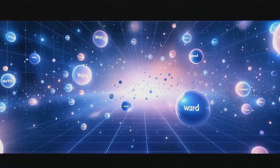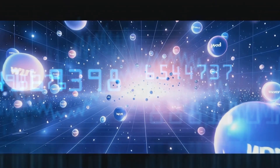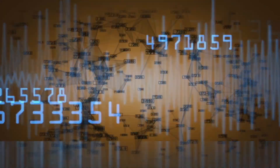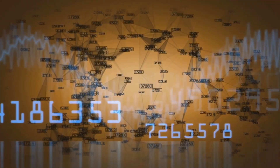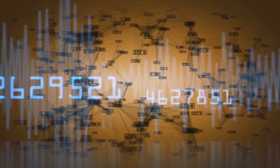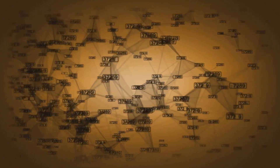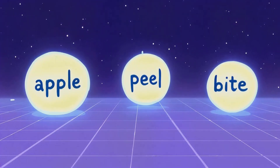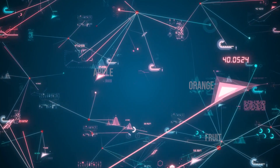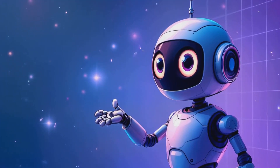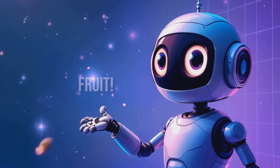It uses multiple dimensions to store this information about the related words. When you search for something, the database finds the closest words in this space. It's not just matching letters, but understanding context and relationships. And that's how neural networks can grasp the nuances of human language in milliseconds.